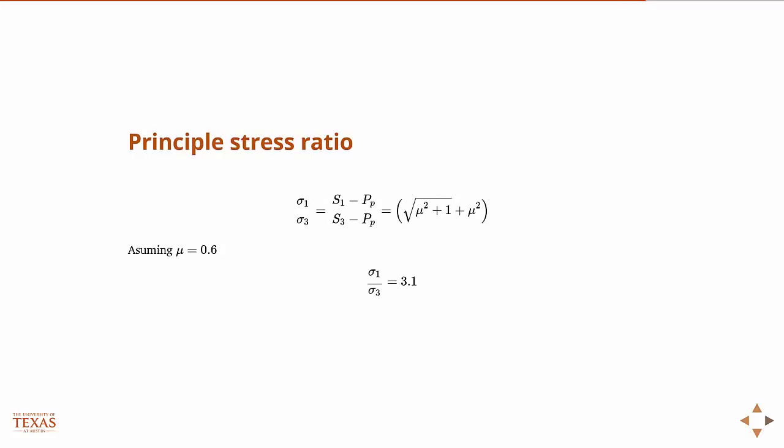We can also, basically, from the geometry of the Mohr's circle - because the whole model is based on this Mohr's circle idea - from the geometry of the Mohr's circle, we can come up with a maximum ratio of the principal stresses. For a friction coefficient of 0.6, we see that the maximum ratio of maximum to minimum principal stress on an optimally oriented fault is somewhere around 3.1.